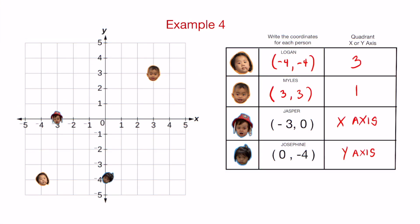Here are the answers for the example problem. I try to trick you with Jasper and Josephine, my niece and nephew. So you want to look. If there is a zero in one of these, just look at the one with the number on it, x at negative three. And all you got to do is look at the x-axis, find negative three and zero means they don't go up and down. So Jasper would be right here. Do the same for Josephine. It is the y number that has the number. So negative four, zero would be right there. And they do not belong in any of the quadrants. Jasper is at the x-axis. Josephine is on the y-axis.